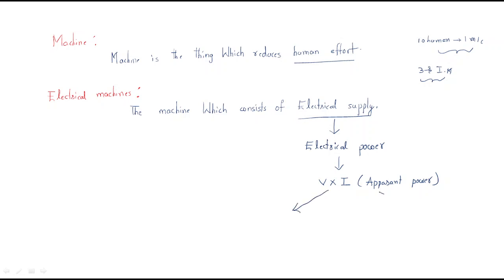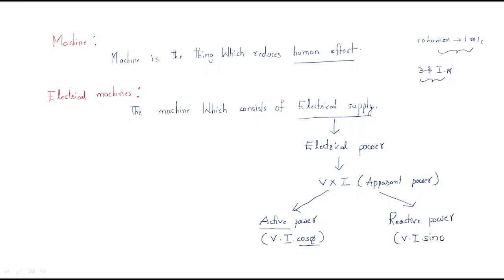The apparent power is divided into two types. One is active power, which involves the power factor: P = VI cos φ. The other is reactive power, which is Q = VI sin φ. Both are equally important. Any machine that has involvement of these power quantities is known as an electrical machine.